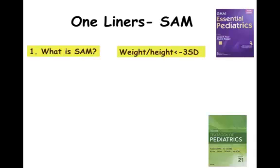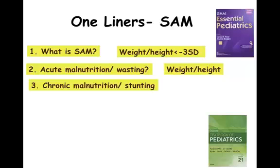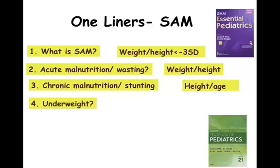Let's revise: weight-for-height less than minus three standard deviations is the most important criteria for SAM — this also came in NEET PG last year. Remember: acute malnutrition uses weight-for-height, while chronic malnutrition uses height-for-age. Stunting means chronic malnutrition and refers to height-for-age. Underweight is defined as weight-for-age less than minus two standard deviations — this also came in NEET PG last year.